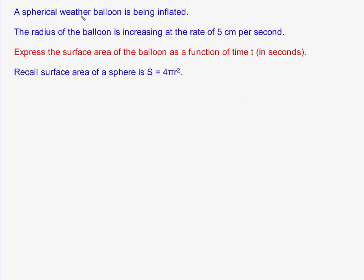In this problem we're given that a spherical weather balloon, so basically a ball, is being inflated. The radius of the balloon is increasing at the rate of 5 centimeters per second. So this is the given information.